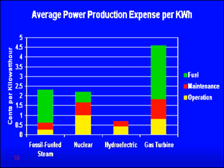This sketch shows the cost per unit of energy generated from different sources: fossil fuel steam power plants, nuclear power plants, hydroelectric power plants, and gas turbine power plants. The cost consists of three items: fuel cost (green), maintenance cost (red), and operational cost (yellow). The total cost per kilowatt-hour was highest for gas turbine plants and lowest for hydroelectric power plants. In hydroelectric power plants there is no fuel cost at all, because water is free.